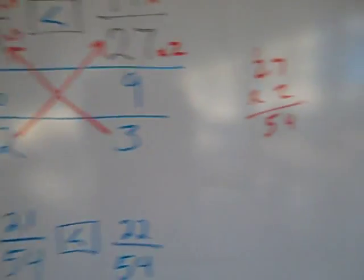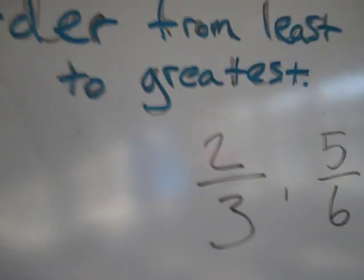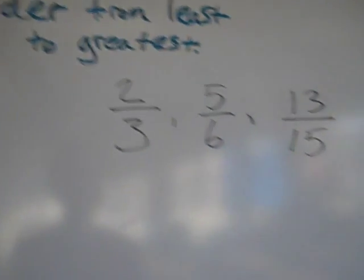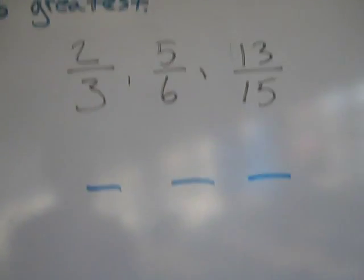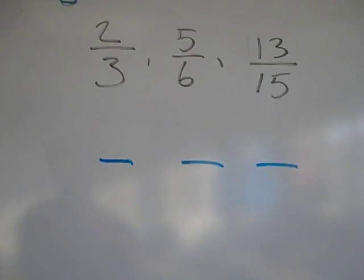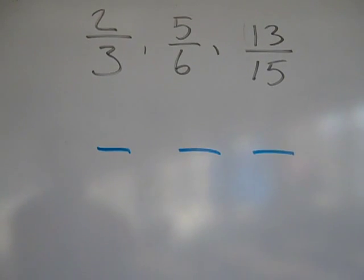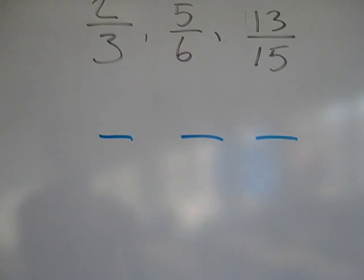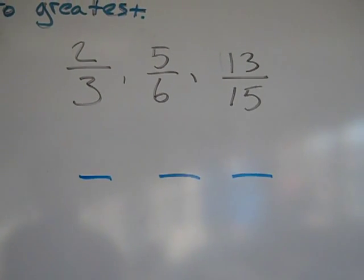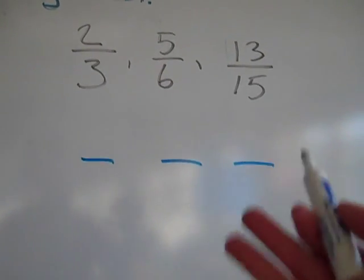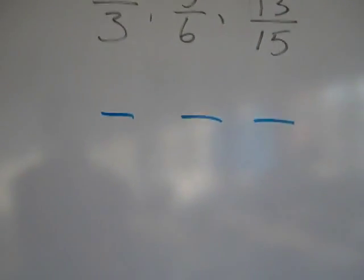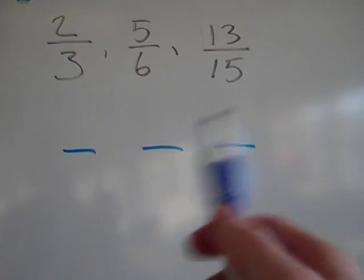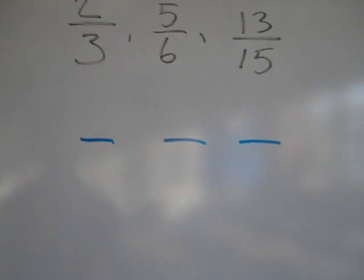The last example I'm going to show is ordering from least to greatest. Here I have three fractions: two-thirds, five-sixths, and thirteen-fifteenths. In order to do these you have to give them all the same denominators. I'm going to list the multiples starting with fifteen, since that's the biggest number.